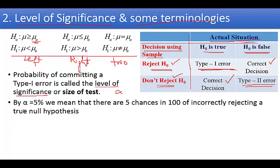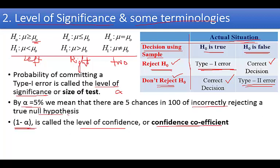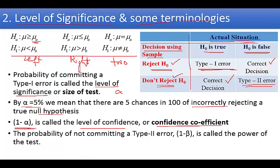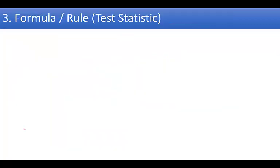The probability of committing a Type 1 error is known as the level of significance, denoted by alpha. If alpha is 5%, it means there are 5 chances in 100 of incorrectly rejecting the null hypothesis. Contrary to alpha, 1 minus alpha is the level of confidence — also called the confidence coefficient. The probability of a Type 2 error is beta, and 1 minus beta is called the power of the test.